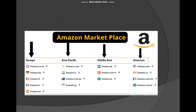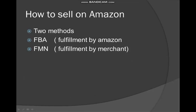Amazon Marketplaces are spread across regions. In Europe: Amazon.co.uk, Amazon.de (Germany), Amazon.fr (France), Amazon.it (Italy), Amazon.es (Spain). In Asia Pacific: India, Australia, Singapore. In the Middle East: Dubai, Amazon.ae. Also Turkey and Saudi Arabia. In the Americas: Amazon.com (USA), Amazon.ca (Canada), Amazon.com.mx (Mexico), and Amazon.com.br (Brazil).